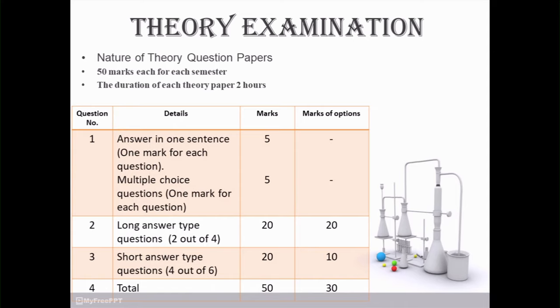Question number 3: short answer type questions. Six questions provided, out of 6 you have to solve any four. One question carries the weightage of 5, so total marks is 20. But six questions are provided, so marks with option is 10 marks.